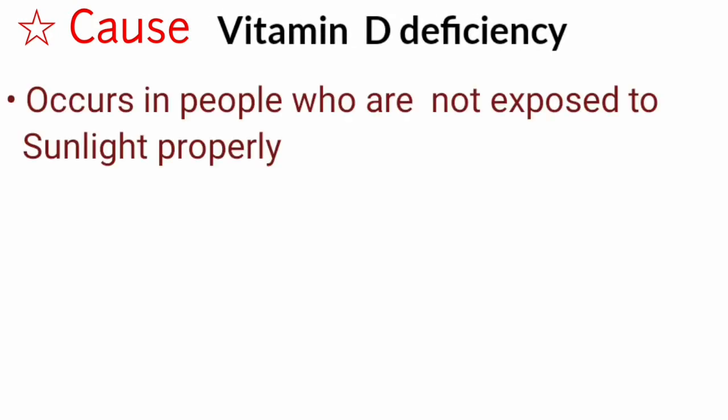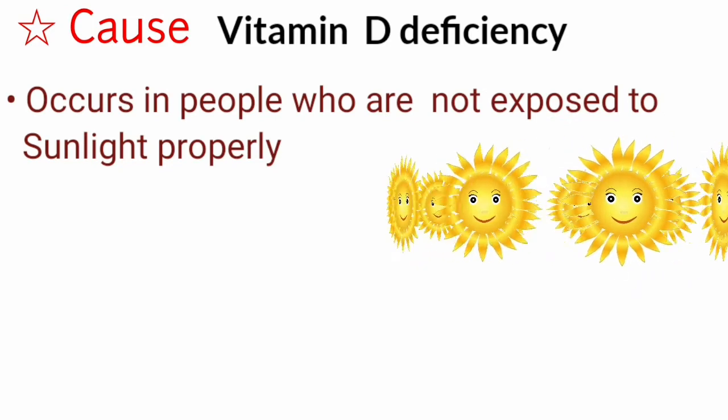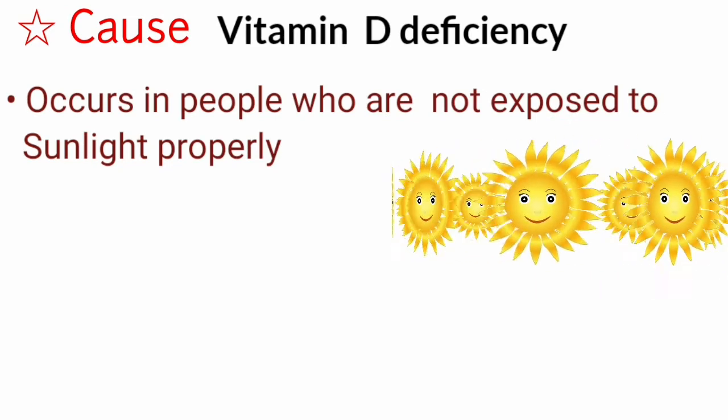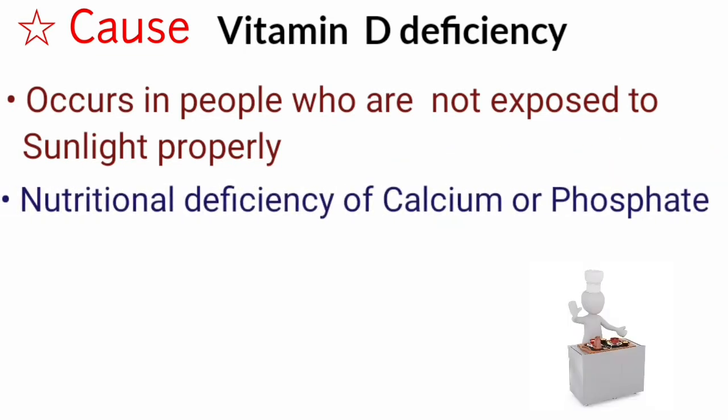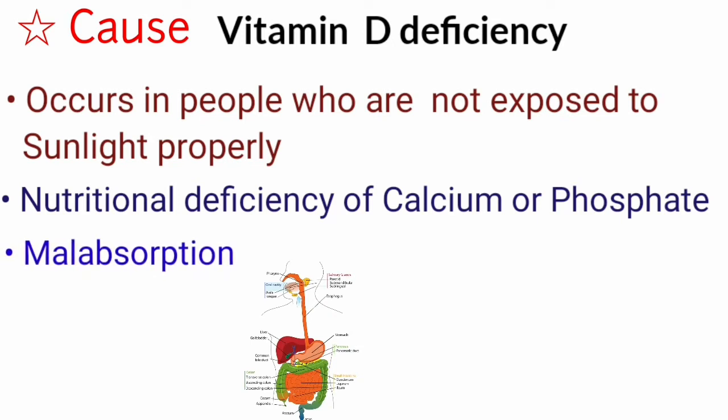The cause for rickets is vitamin D deficiency. Vitamin D deficiency occurs in people who are not exposed to sunlight properly, due to nutritional deficiency of calcium or phosphate, or due to malabsorption of vitamins as in the case of obstructive jaundice and steatorrhea.